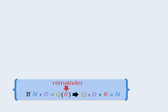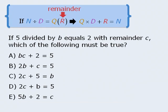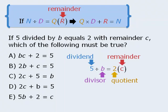Let's now take this rule and use it to answer a question you might see on test day. You might want to pause the video now and try the question before continuing. The question tells us that when 5 is divided by b, the quotient is 2 and the remainder is c.